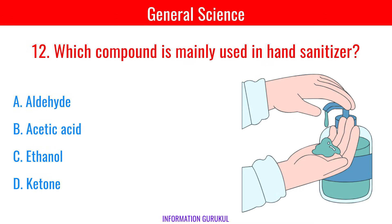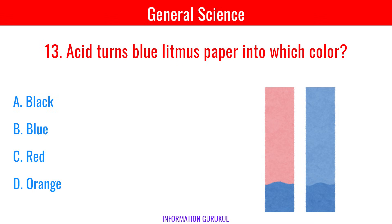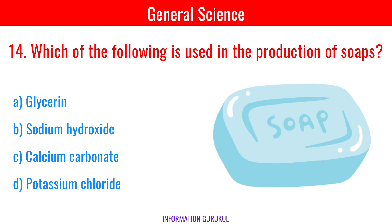Which compound is mainly used in hand sanitizer? Ethanol. Acid turns blue litmus paper into which color? Red. Which of the following is used in the production of soaps? Sodium hydroxide.